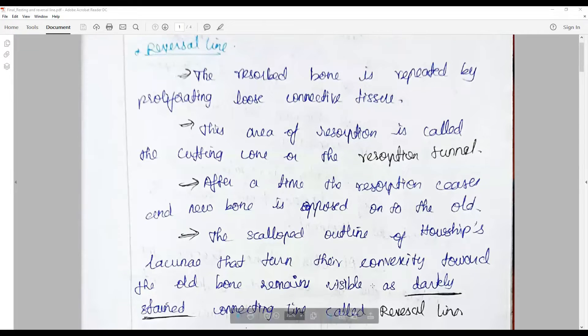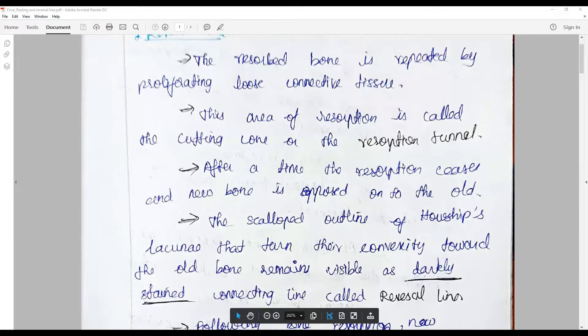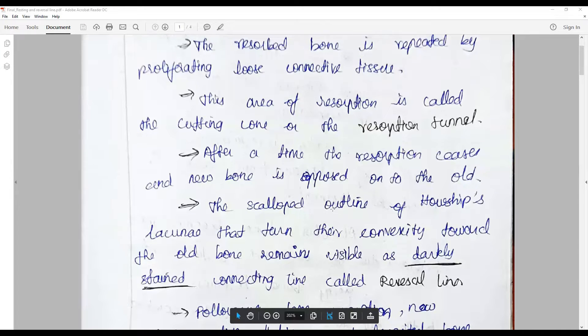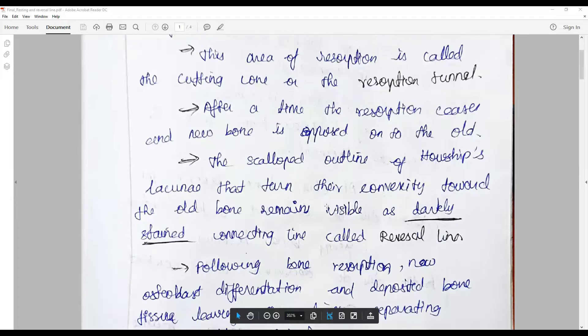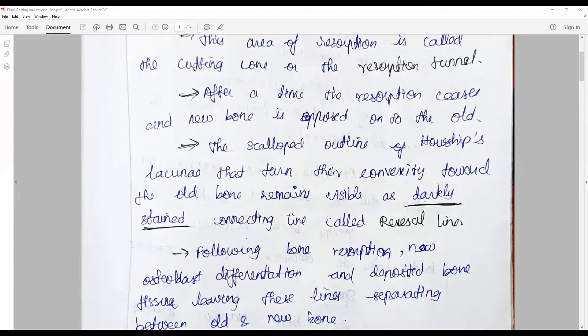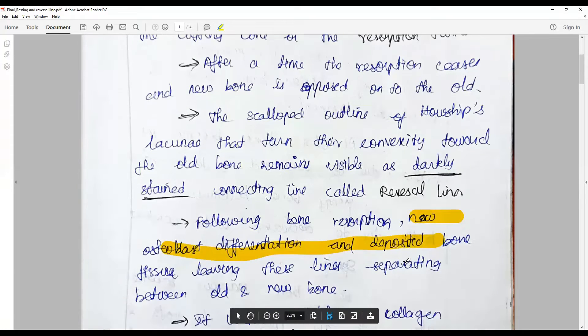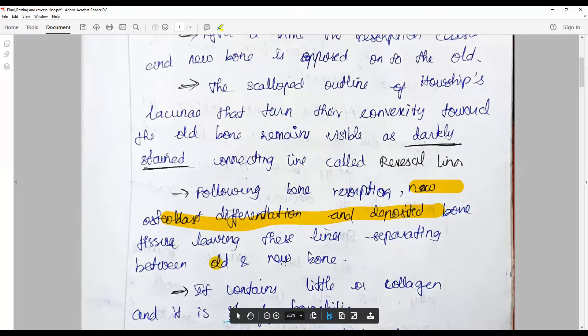This scalloped outline of the hollow Howship's lacunae turn their convexity towards the old bone and remain visible as darkly stained connecting lines called the reversal lines. Following bone resorption, new osteoblast differentiation and deposition happens, lying between this line separating the old and new